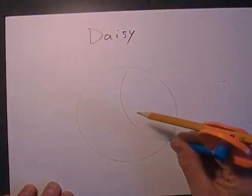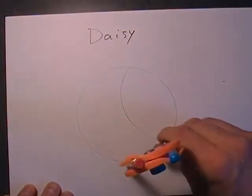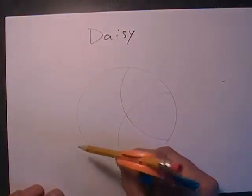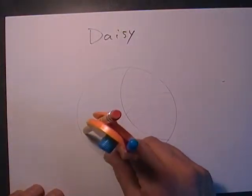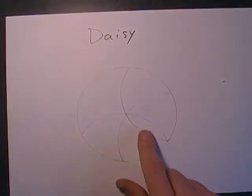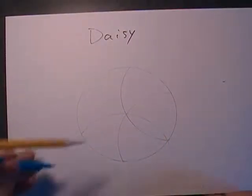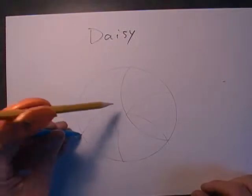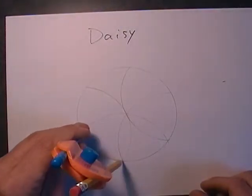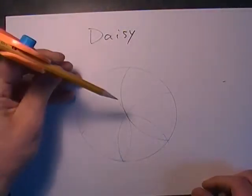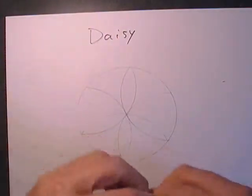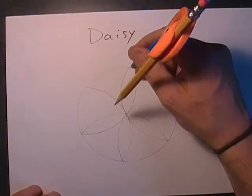Then go to the next one, always crossing that center point, and just go all the way around. There's my first petal. Go all the way around until...